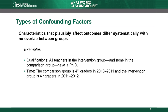Another type of confounding factor occurs when the characteristics of study units in the intervention group differ from those in the comparison group with no overlap, and the characteristic must plausibly affect outcomes. One example is teacher qualifications. If all teachers in the intervention group have a PhD and no teachers in the comparison group have a PhD, it's possible that something the intervention teachers learned in their PhD programs contributed to the observed impacts rather than the intervention itself.